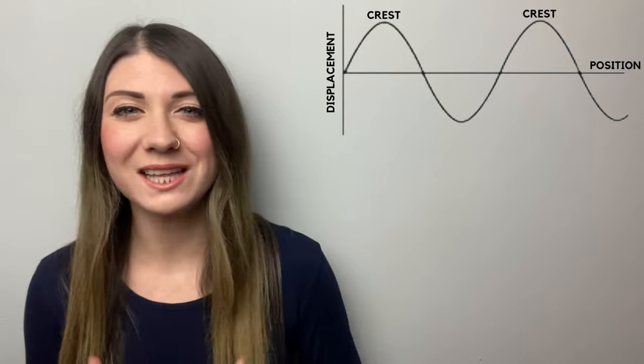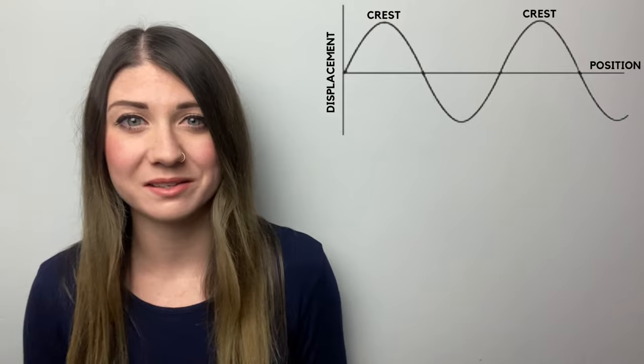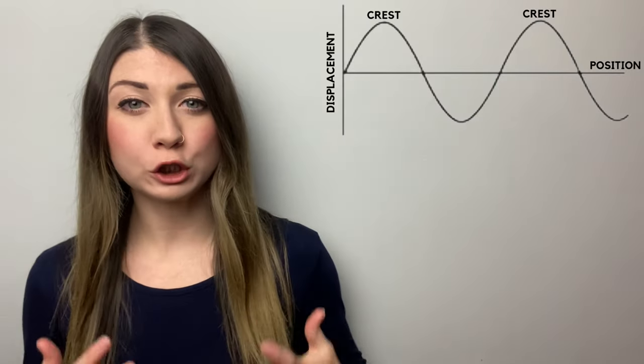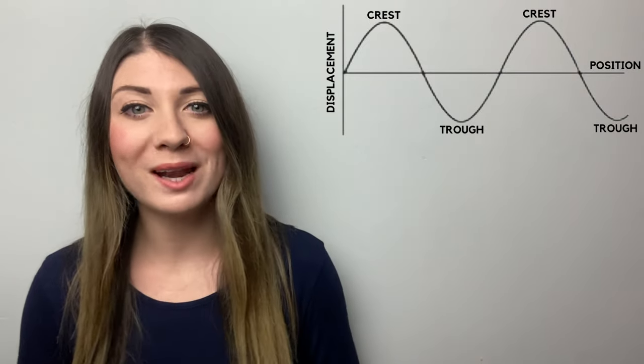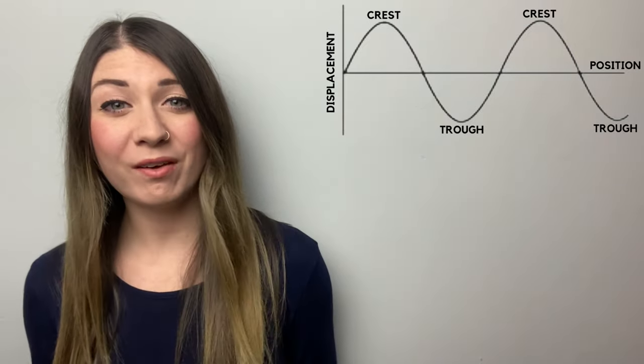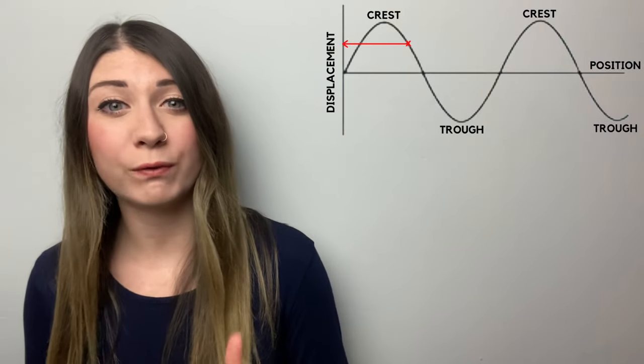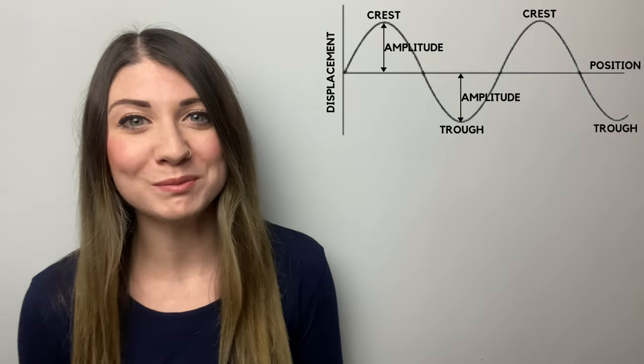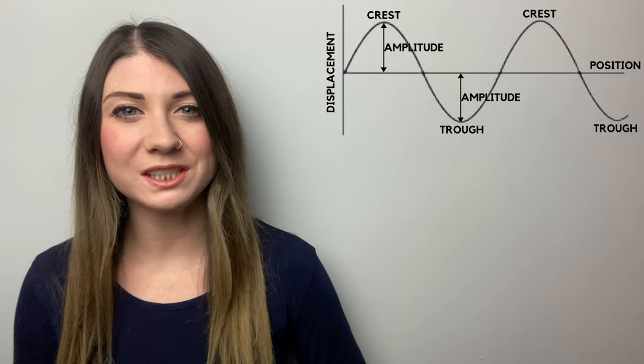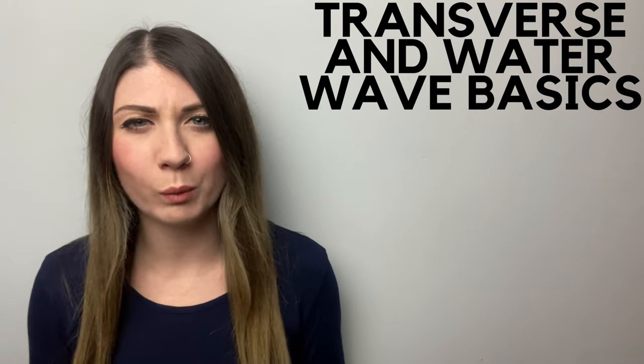And the crest is the highest part of the wave, so the point at which the wave is highest above the x-axis. And the trough is the lowest part of the wave, the point at which the wave is lowest below the x-axis. Therefore as we can see, displacement is how far a point on the wave is from the x-axis or the middle line. And the amplitude is the maximum displacement, so the distance from the middle of the wave to a crest or trough. Okay that's the transverse and water wave basics.